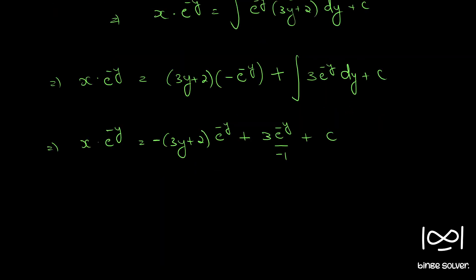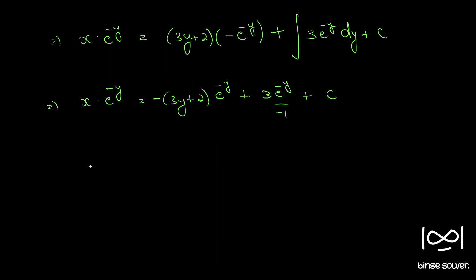This is our answer. So if you multiply throughout by e raised to y and do some rearrangements, we bring (3y plus 2) to the LHS. So x plus 3y plus 2 minus 3 — and there is a minus sign — so 3 plus 2 plus 5 equals c times e raised to y.